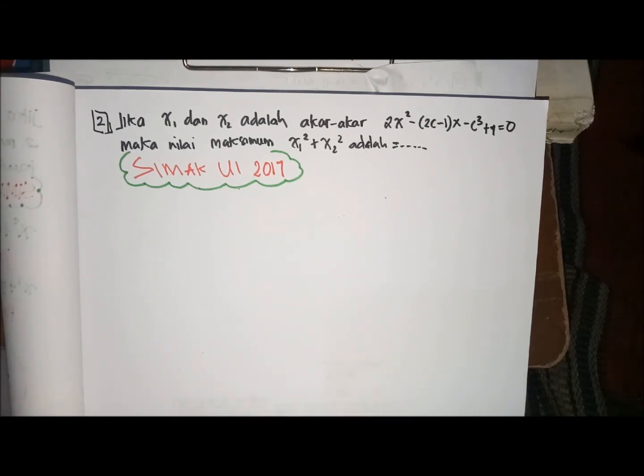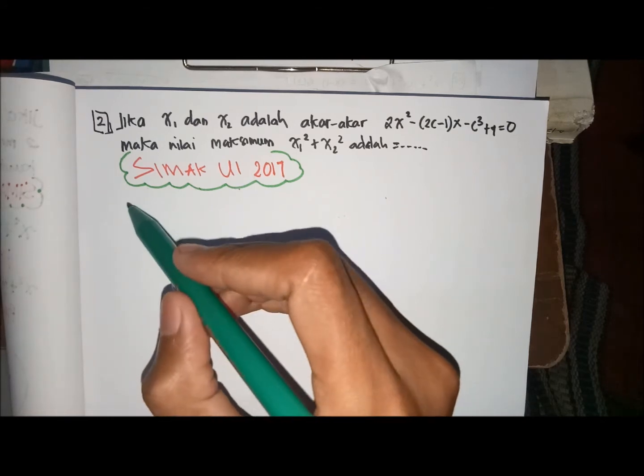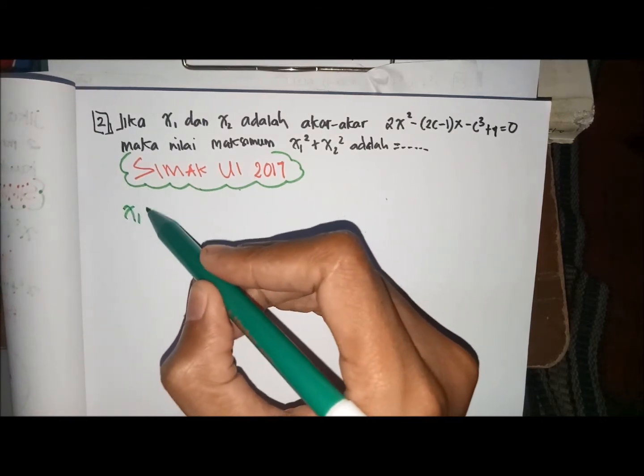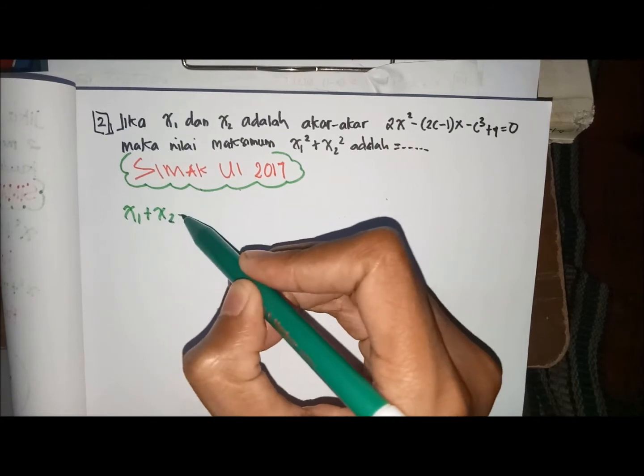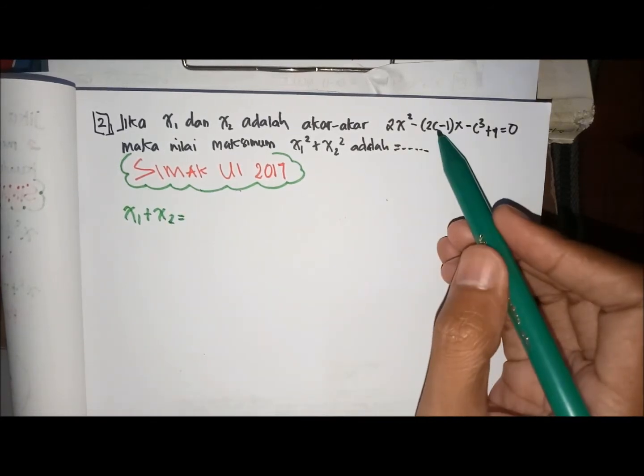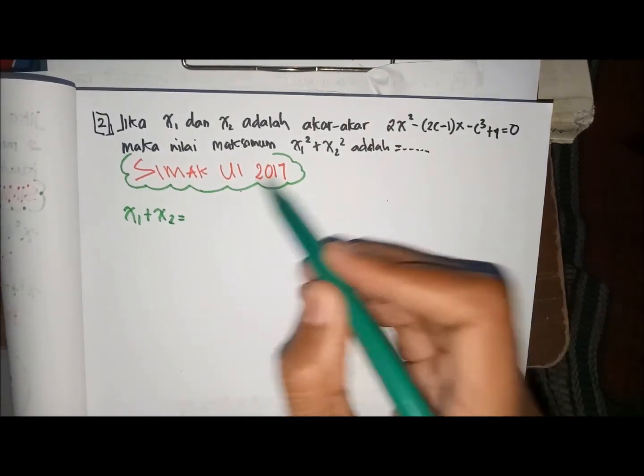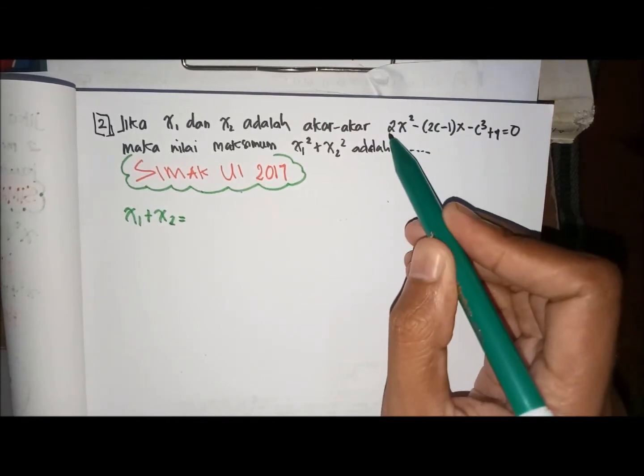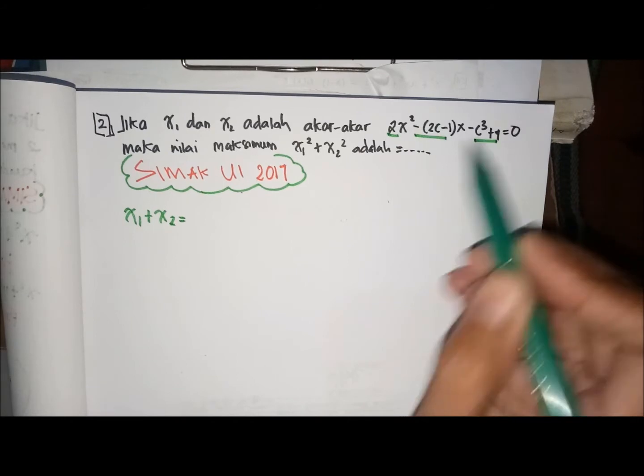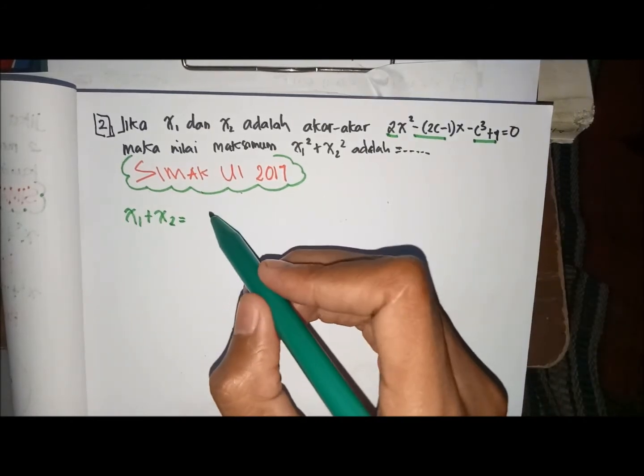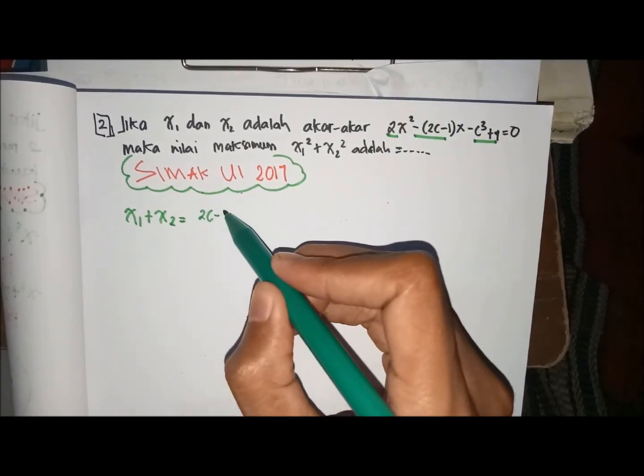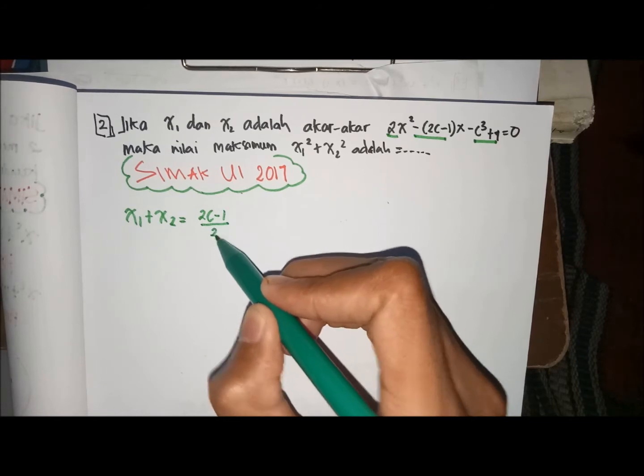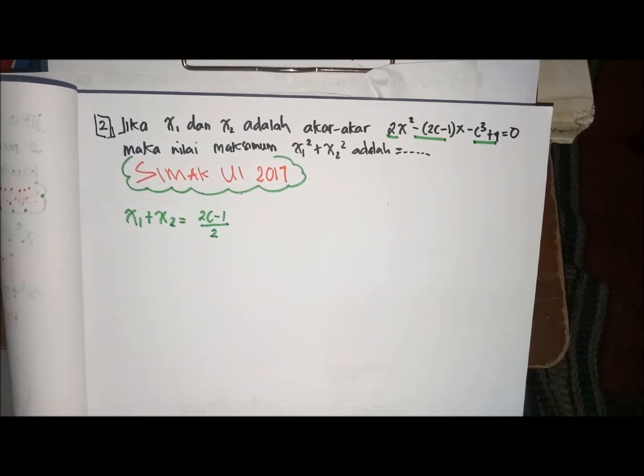kita cari X1 plus X2, min B per A. Berarti min, ketemu ini A, ini B, ini C. Berarti kalau min B per A berarti 2C min 1 per 2. Ini X1 plus X2.